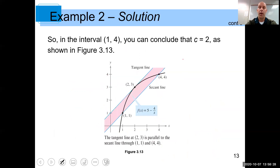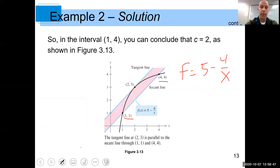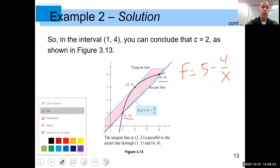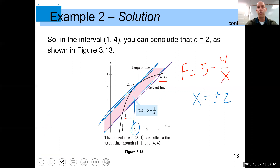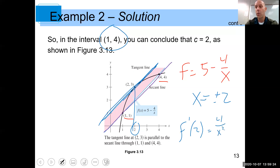Looking at the graph of f of x equals 5 minus 4 over x: f of 1 was 1 and f of 4 was 4. The slope of the secant line — shown in purple — equals the slope of the tangent line — shown in blue — at some value c. Our c value is x equals 2, since negative 2 is not between 1 and 4. f prime of 2 equals 4 over 2 squared, which is 4 over 4, which is indeed 1. This verifies the Mean Value Theorem.